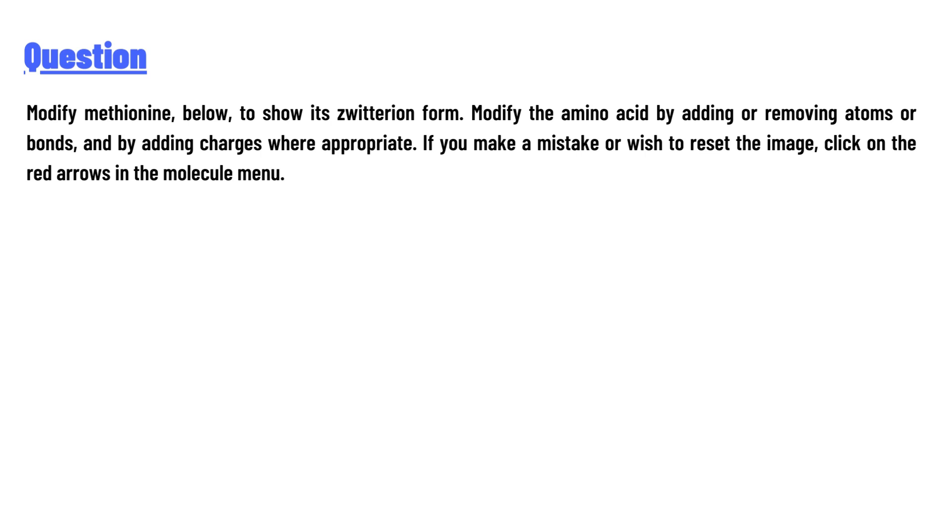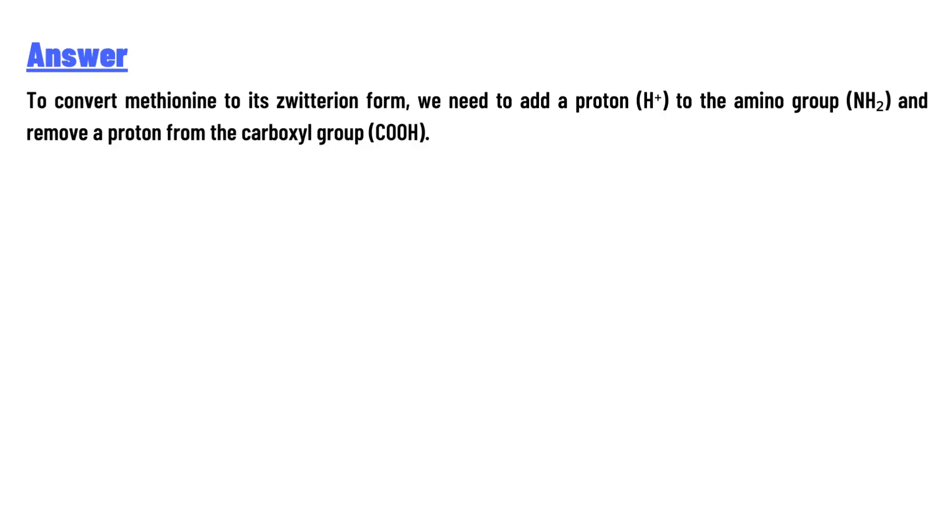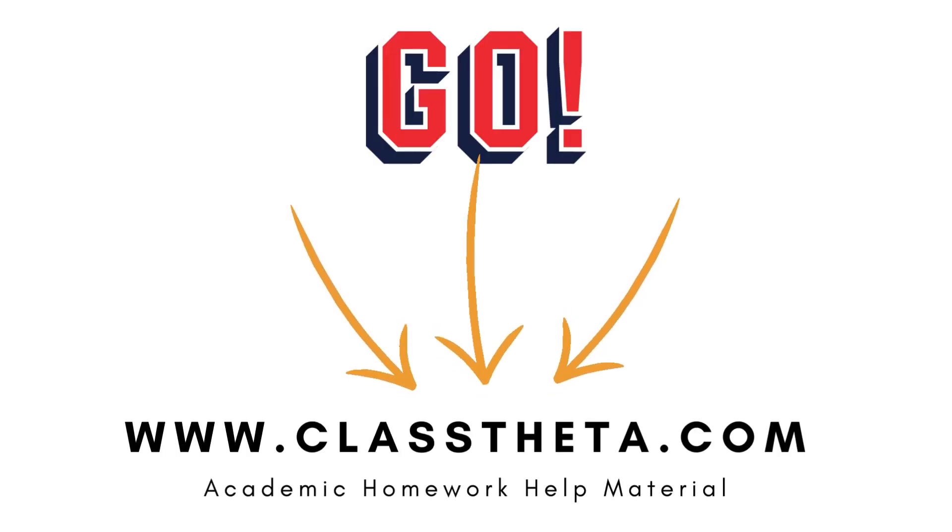The answer to the question is: to convert methionine to its zwitterion form, we need to add a proton (H+) to the amino group (NH2) and remove a proton from the carboxyl group (COOH). Thank you for watching the video. If you have any questions related to this video, please post a comment below.